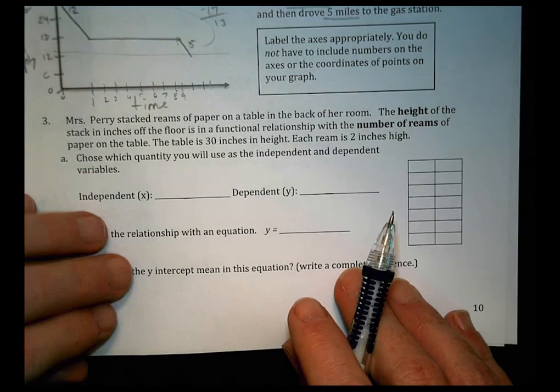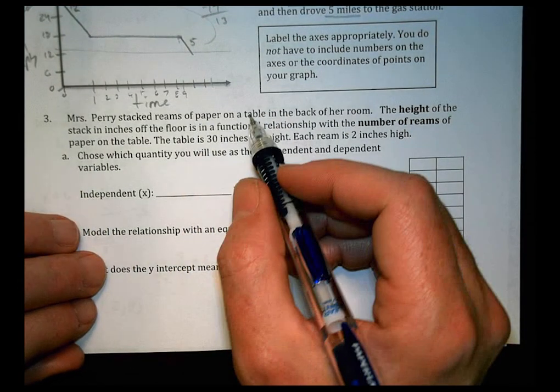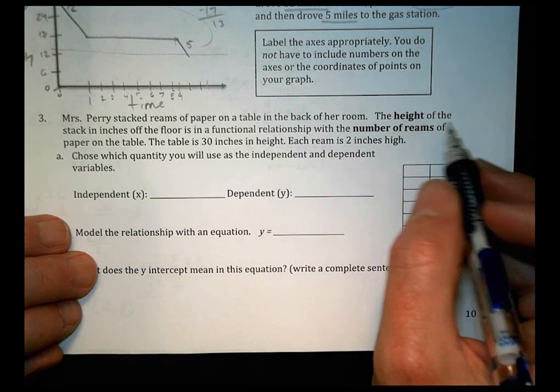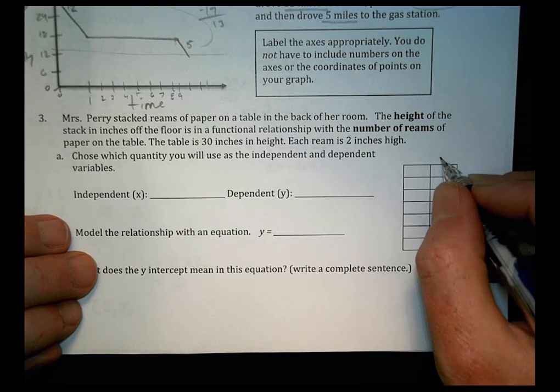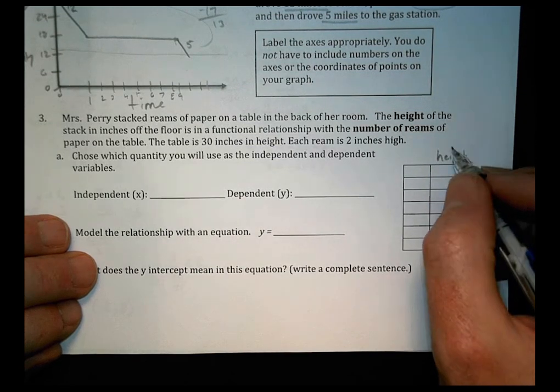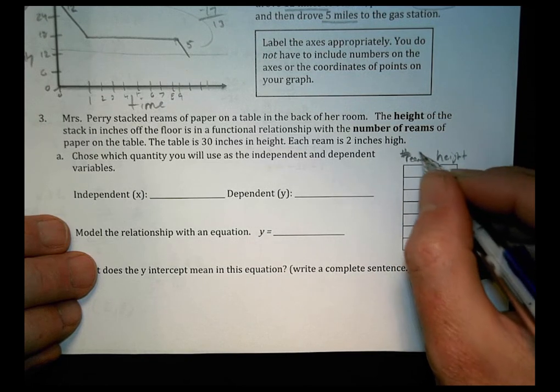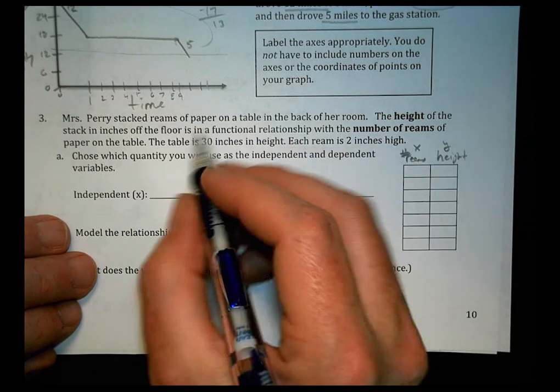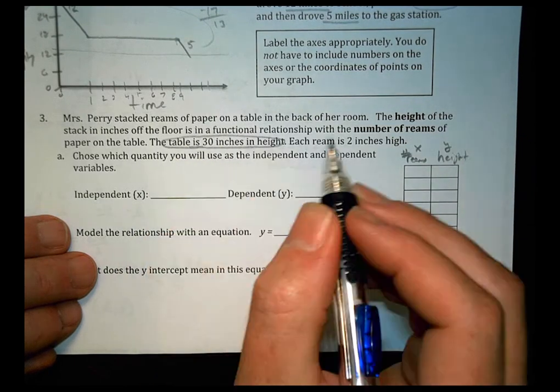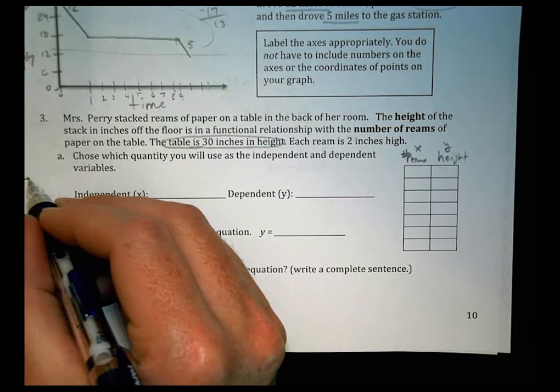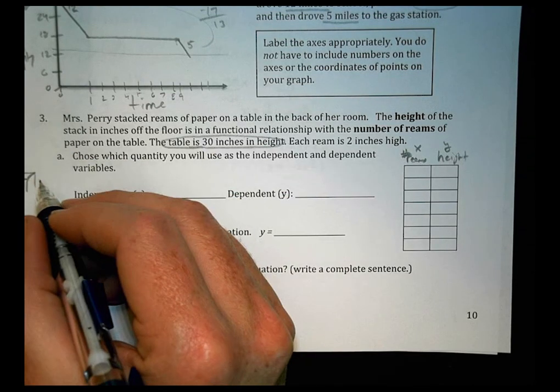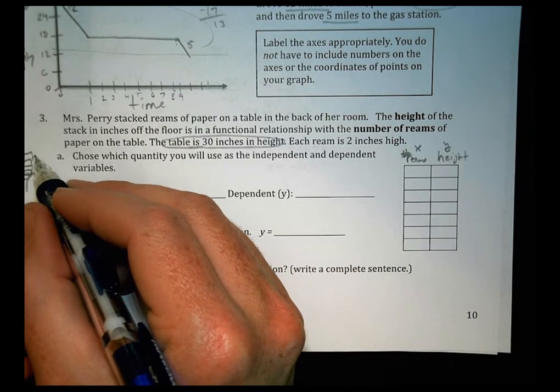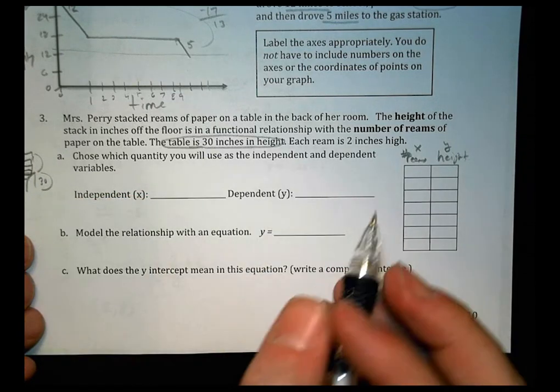Number 3. Mrs. Perry stacked reams of paper on a table at the back of her room. The height of the stack in inches off the floor is a functional relationship with the number of reams. So what we're saying here is that the height is a function of the number of reams. That's our x and our y. The height depends upon the number of reams per table. The table is 30 inches high. Oh, that's interesting. So we already have a starting point there. So think of it like this. Here is our table. The table already is 30 inches high and you're going to stack paper on top of it. So that's the height of the paper stack, but the paper stack also needs to include that 30 inches where you started from.